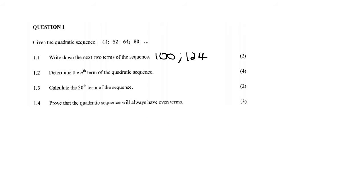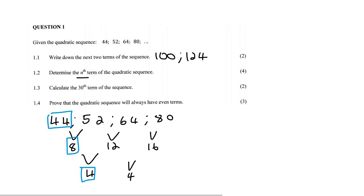Then they want us to determine the nth term. So remember, the way we do that is very easy. You need to see, we did 8, 12, 16, then you go down to the next level, 4 and 4. Then we circle the first numbers in each row, and there's a formula. For the first one, or the one at the bottom, you say 2a, then you say 3a plus b, and then you say a plus b plus c.